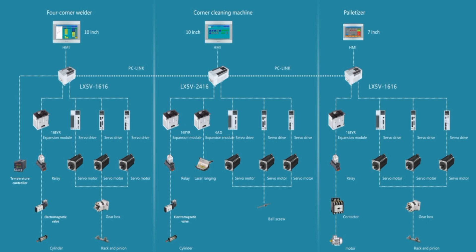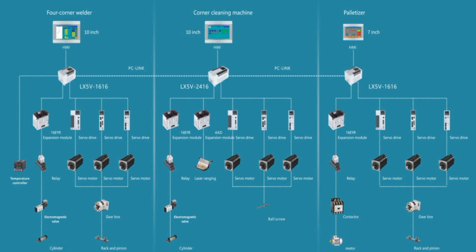This is the complete overview of the production line. Starting from the beginning: the first panel is for the corner welding machine, which has a separate HMI and separate PLC. This PLC communicates with different servo drives so the welding machine can adjust in different directions based on the size of frames. There is also a temperature controller for the heater that heats the plastic frames, and relays for solenoid valves which operate the pneumatic cylinders for clamping.